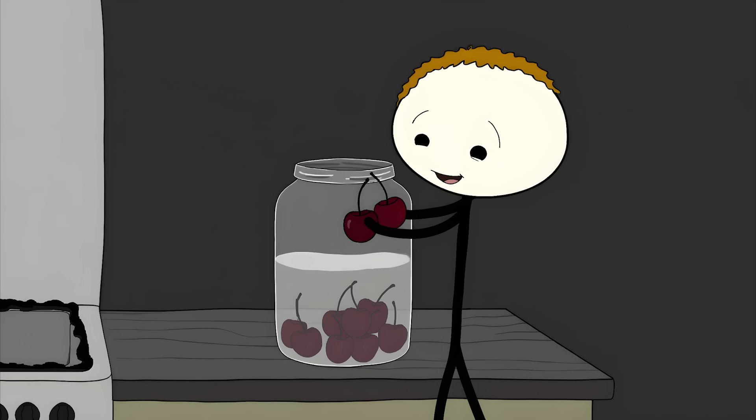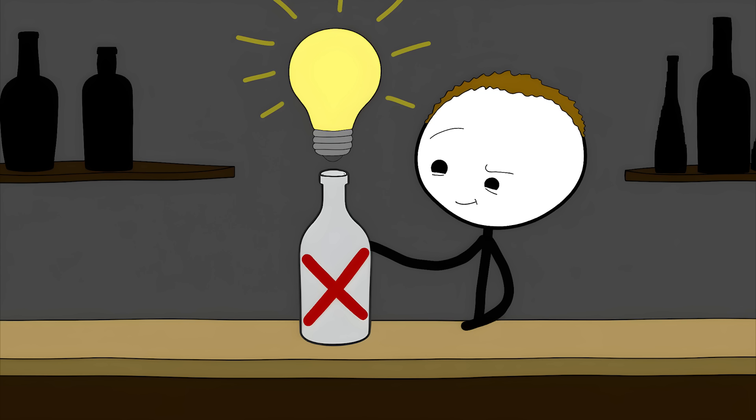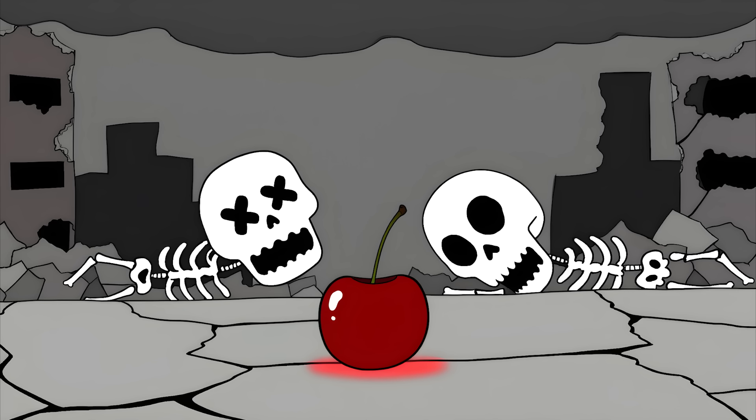The original maraschino cherries were soaked in maraschino liqueur, made from special Croatian cherries. They were fancy, expensive, and actually tasted like cherries. Then prohibition hit America, and someone decided to just make fake ones instead. And that's how we ended up with these zombie cherries that will probably outlive us all.